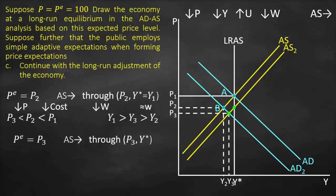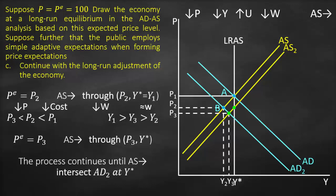Consequently, we will keep repeating the same process again. We shift aggregate supply again to P3 and Y* or Y1, and then we have a new equilibrium price and a new equilibrium quantity — still not long-run equilibrium. Aggregate supply will shift to the right again and again. We keep repeating this process until our aggregate supply intersects with aggregate demand 2 at Y*. At that point, our price is equivalent to our long-run price and our output equals our potential output Y*, which is Y1. Aggregate supply will not reach this point immediately — it will keep shifting a couple of times, shown by dashes indicating continued future shifts.